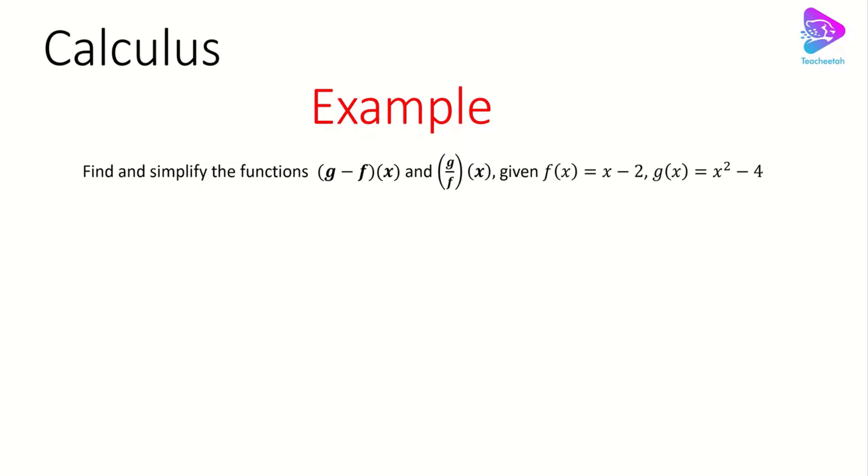Let's look at (g-f)(x). We can easily apply the algebraic operation: g(x) - f(x). Now we plug in g(x) = x² - 4 and f(x) = x - 2. This gives us (x² - 4) - (x - 2). Finally, the answer is x² - x - 2.